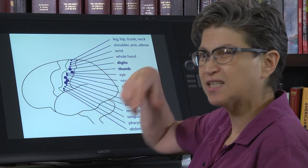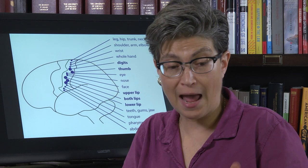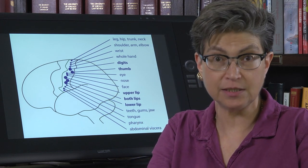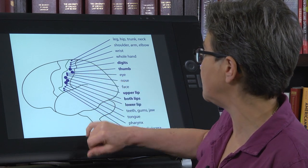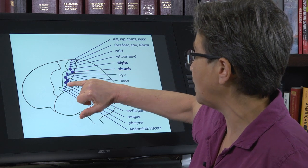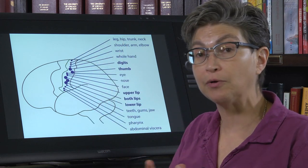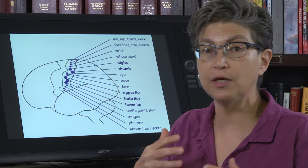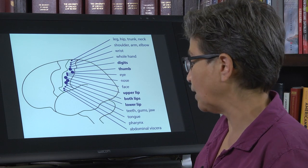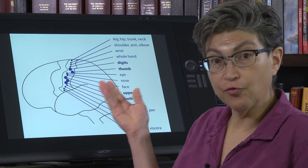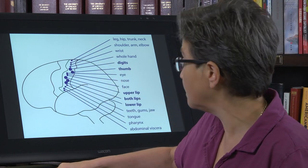Another important feature of this map is that it's discontinuous — it's not a well-behaved map where A is next to B is next to C. We jump around. For example, the upper lip is represented here and also here as part of both lips. It's the context in which the information comes in. This type of mapping is called somatotopy.